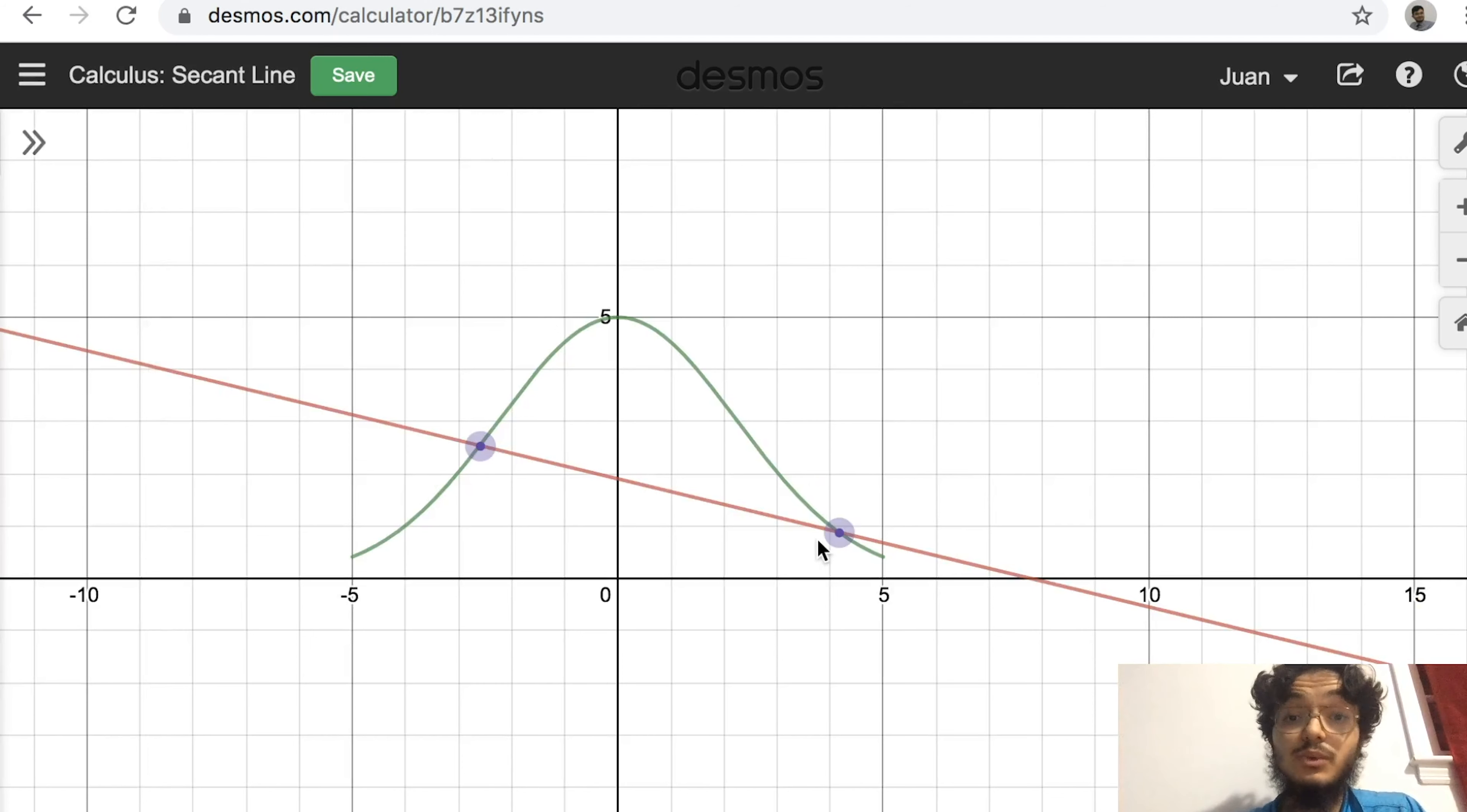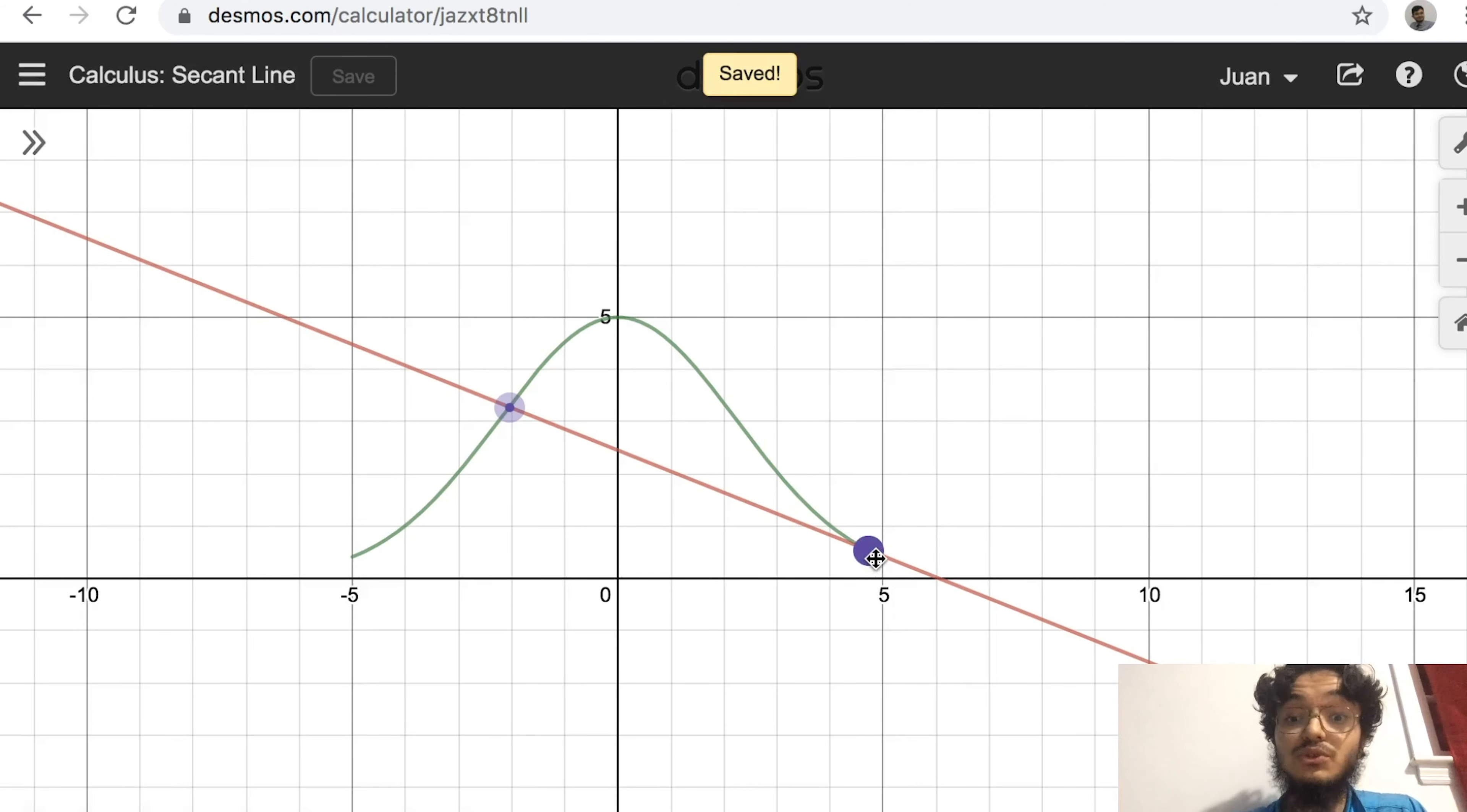Now, what I want to do is I want to show you what it means by average change, average rate of change, and instantaneous rate of change, two very key parts of differential calculus. So over here, what I'm going to do is I'm going to keep one of these points constant. This point over here is going to remain still. And then what I'm going to do is take this point to the right and bring it closer and closer to the other point. So as you can see, it's still a secant line. It just crosses two points on this Gaussian function.